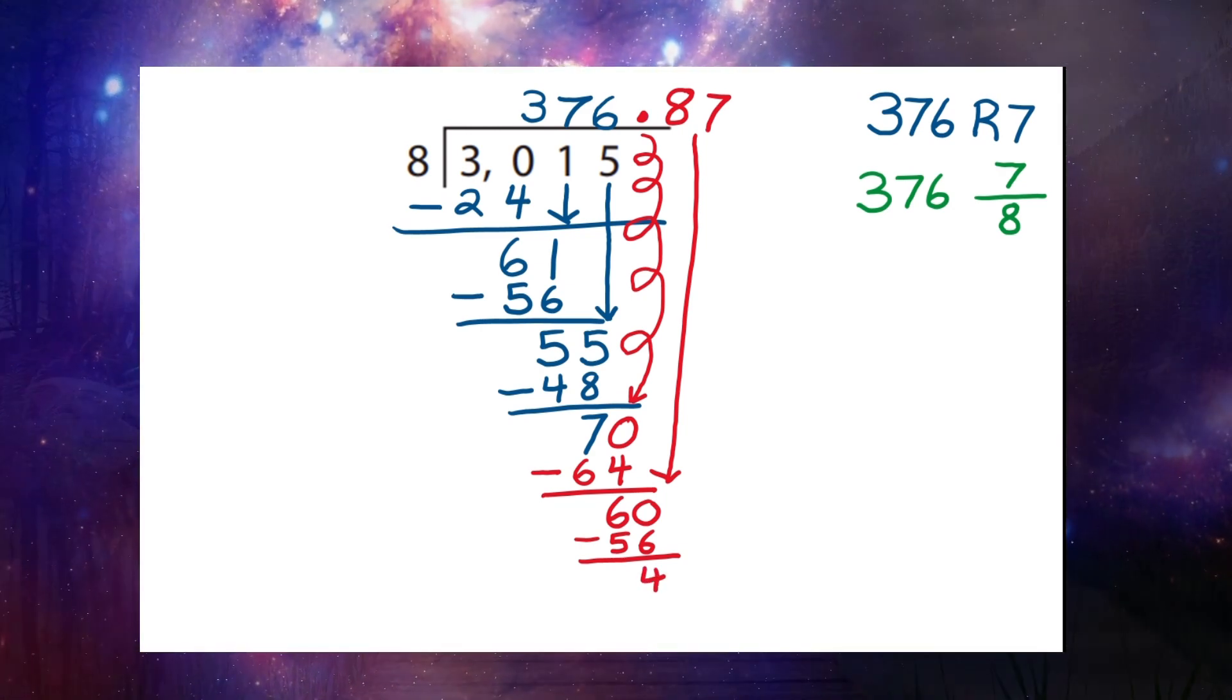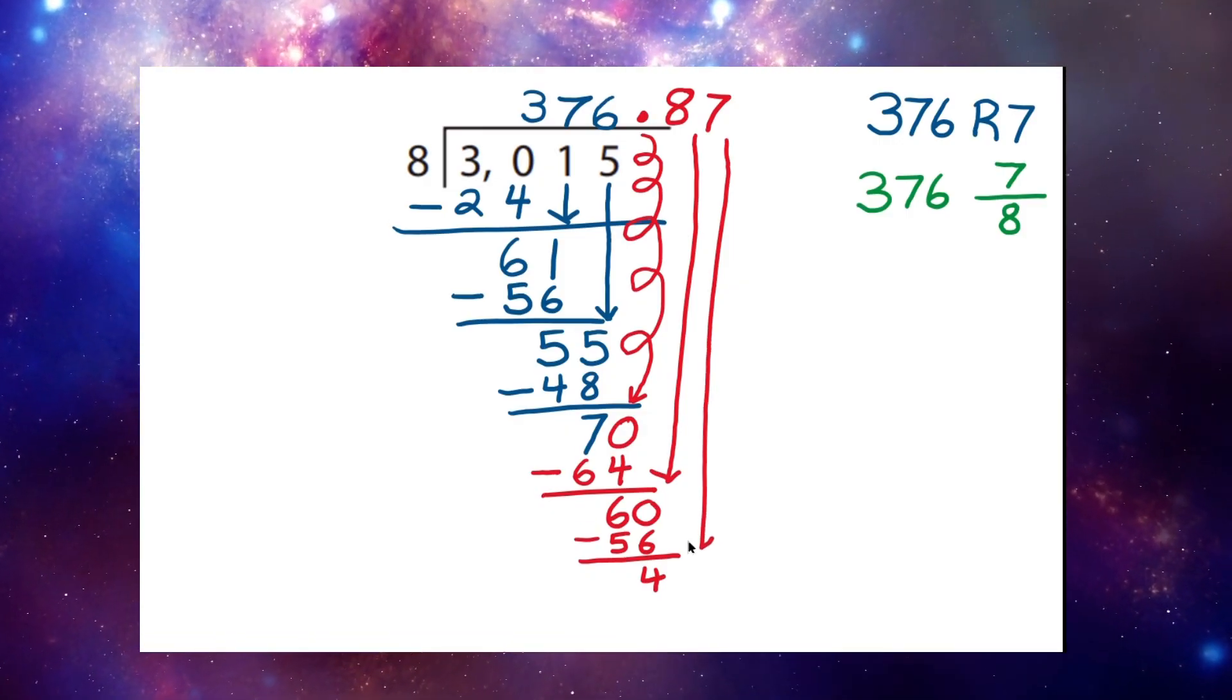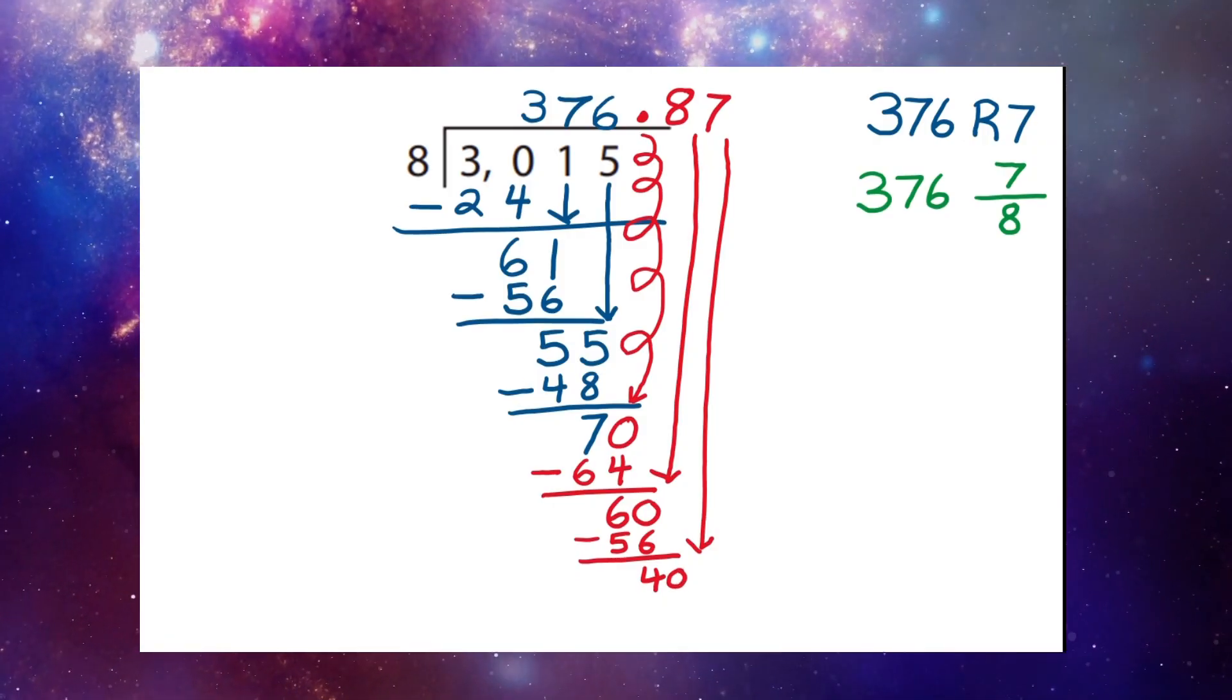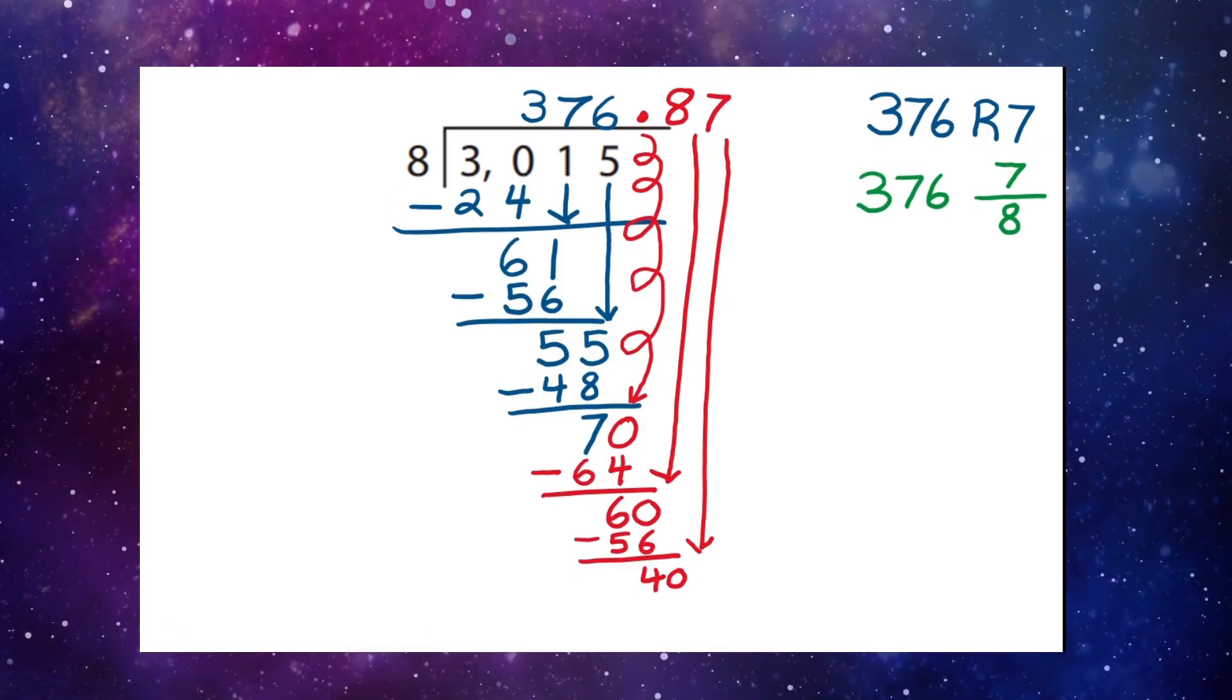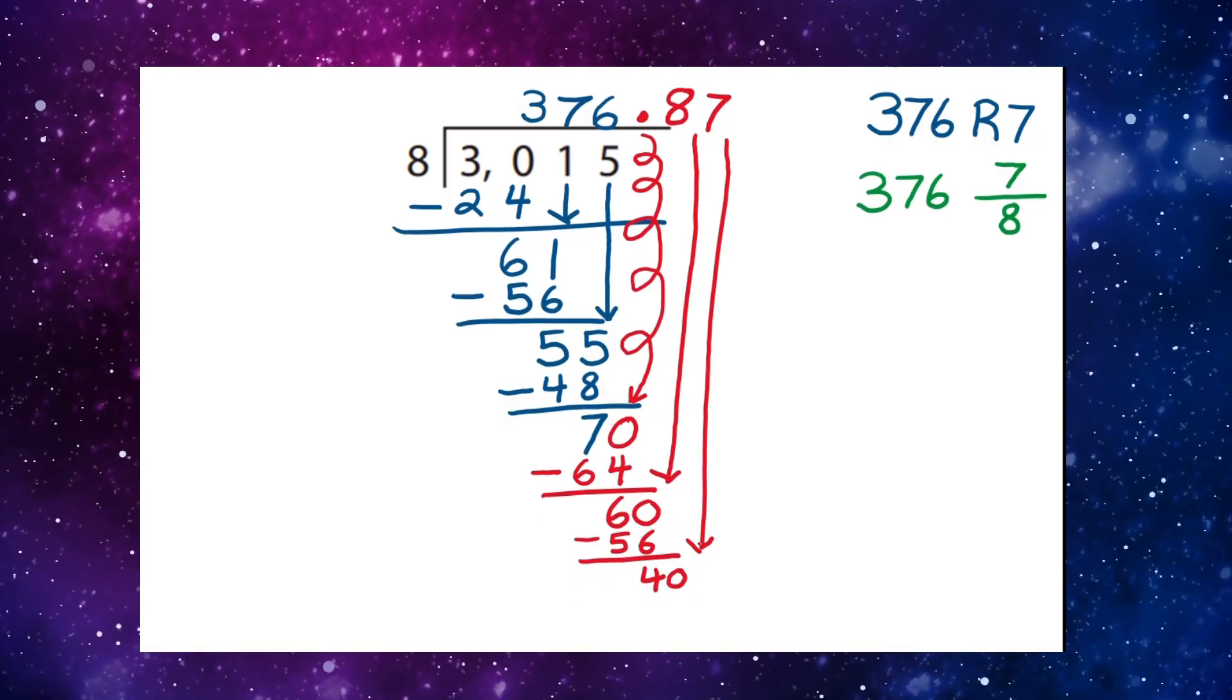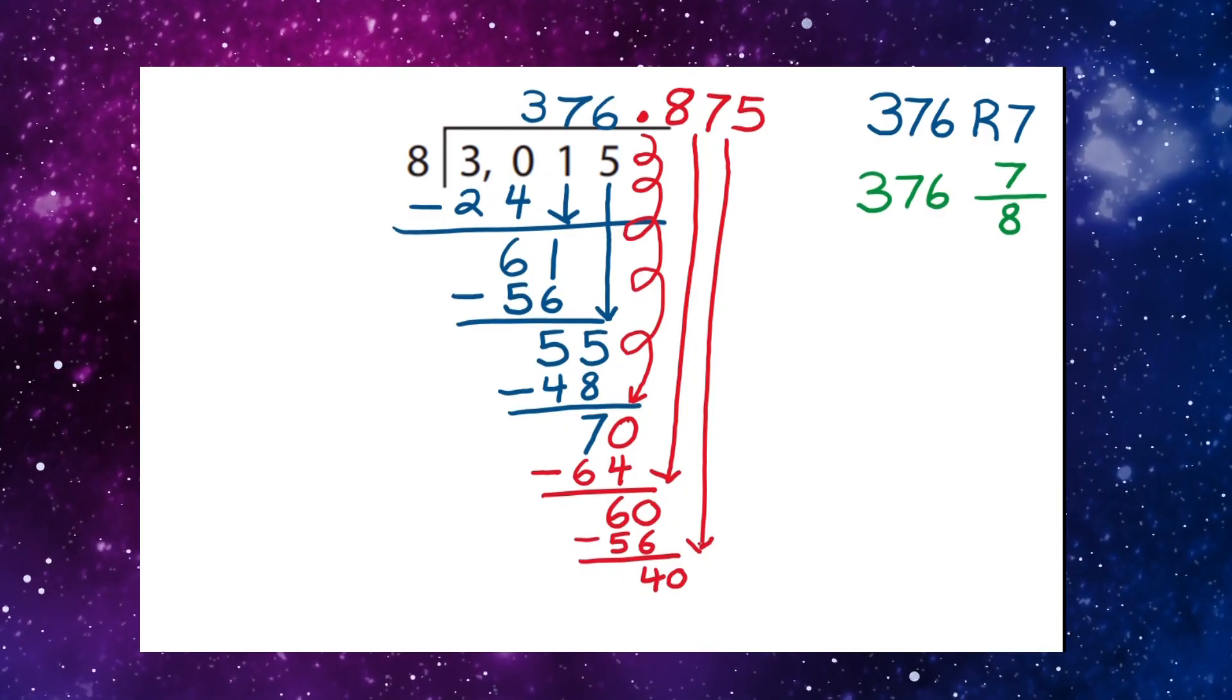And we can bring down yet another zero, another zero hero. And we come up with our friend, the forty. Dear faithful forty. Forty is perfectly divisible by eight. For eight times five, forty is forty.